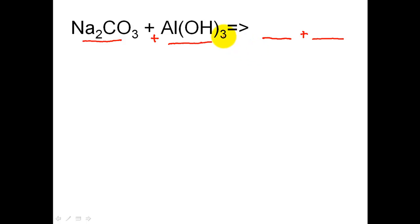In any double replacement reaction, the key to solving it is really just swapping the first two elements. The first element here, sodium, swapping it. Trade places with aluminum. Let them switch. Aluminum will now be with carbonate and sodium will now be where Al was with hydroxide. And that is what I'm going to draw down below.